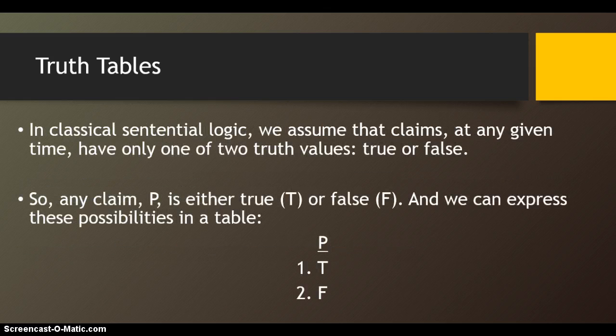In classical sentential logic, we assume that claims, at any given time, have only one of two truth values — that is, true or false — and we can express these possibilities in a table.